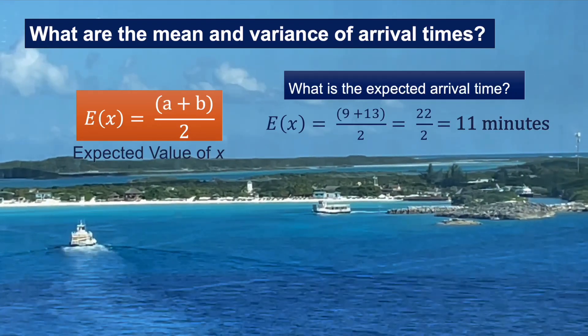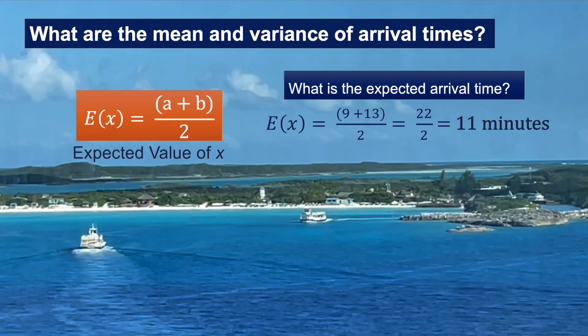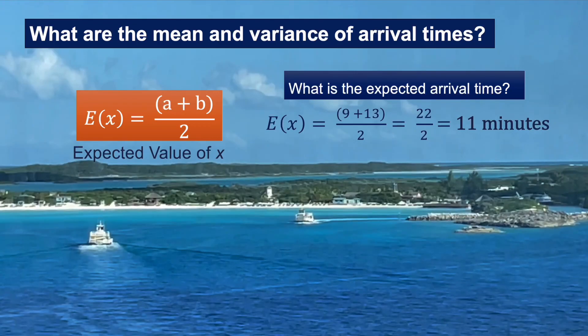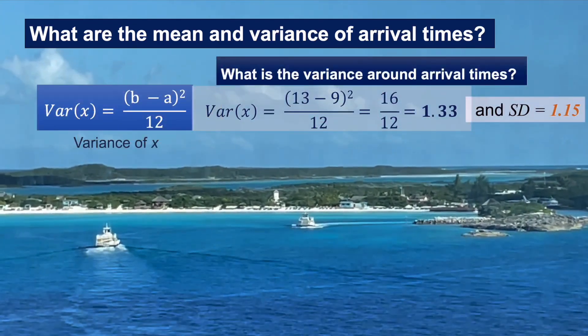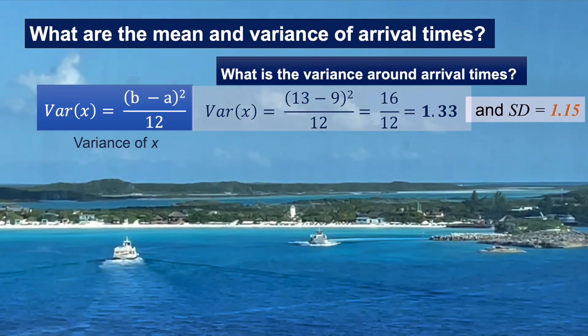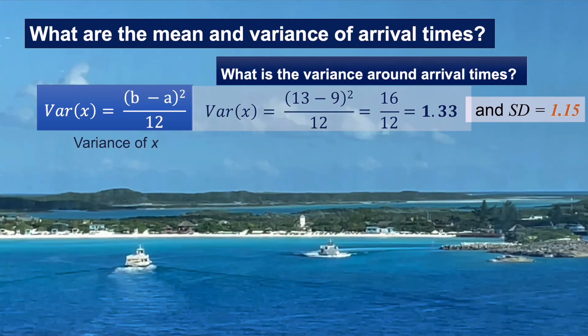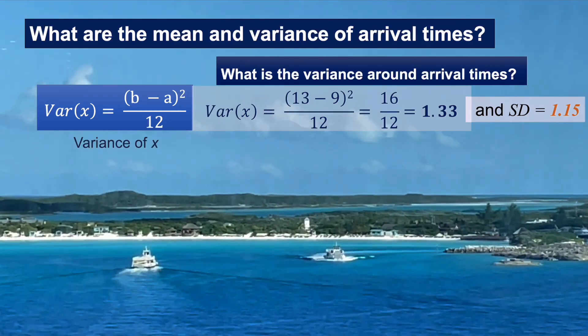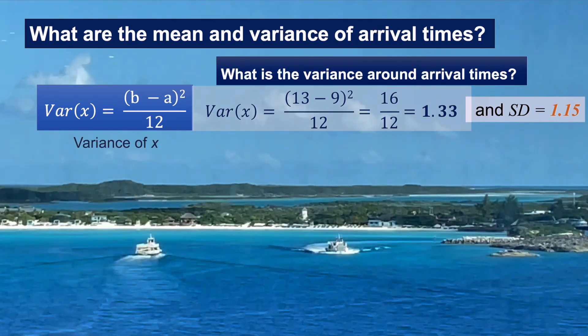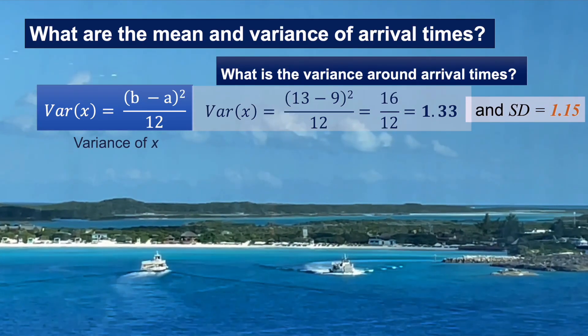Let's calculate the mean and the variance for this distribution. The expected value, or mean, is the minimum plus the maximum, 9 plus 13, divided by 2, or 11 minutes. The variance around these times is the maximum minus the minimum, or 13 minus 9, which is 4, squared, and divided by 12 for a variance of 1.33. We can take the square root of the variance to get the standard deviation, which would be 1.15.